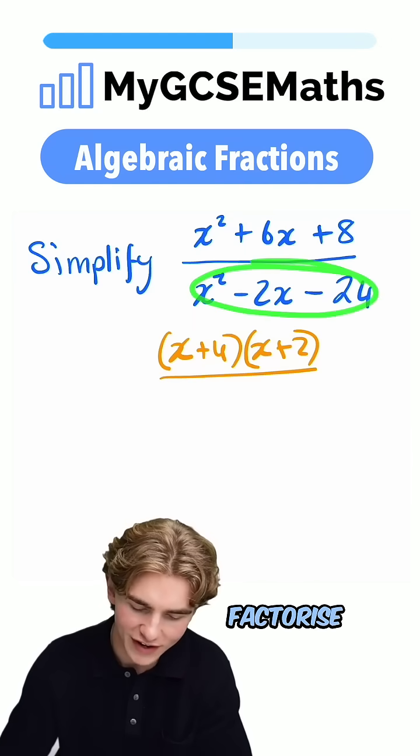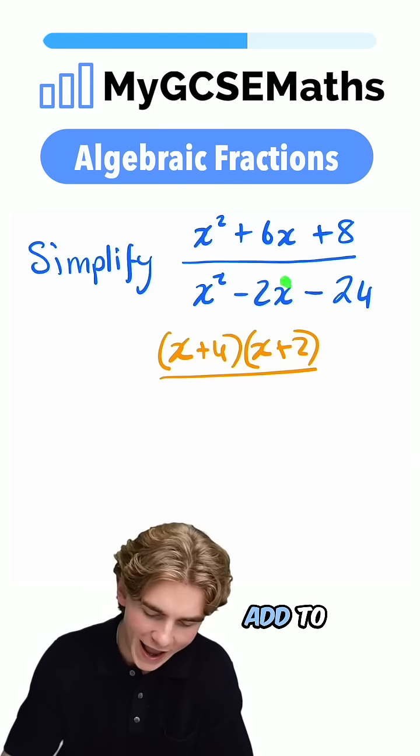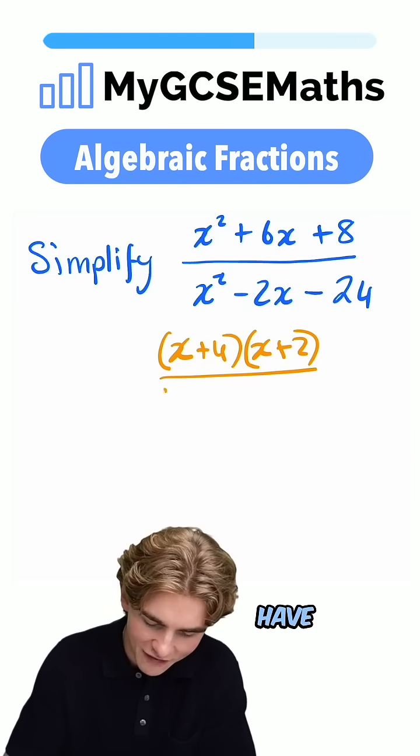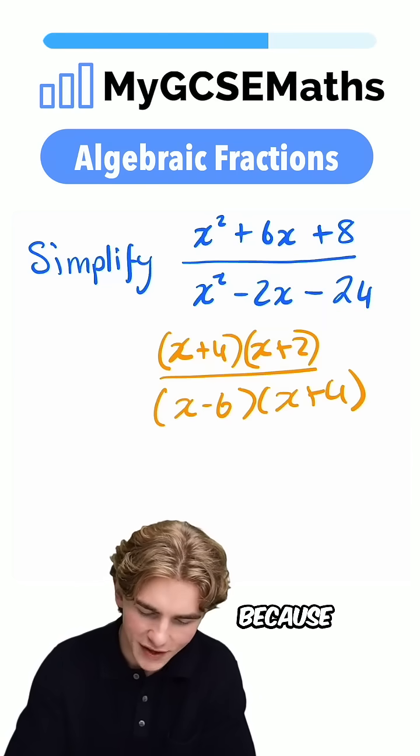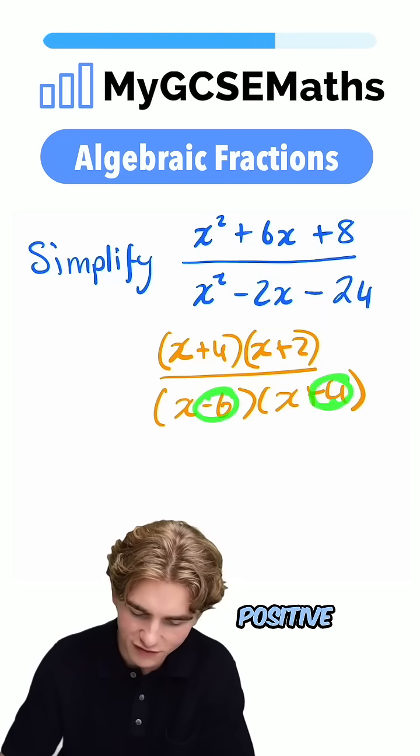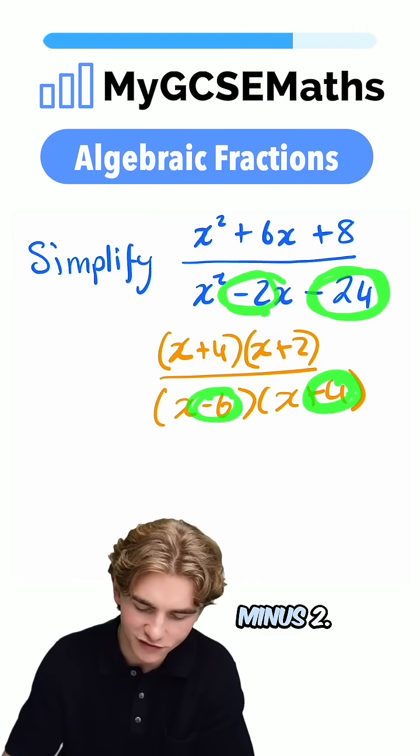Now, on the bottom, we're going to try and factorize this. Two numbers which multiply to give negative 24 and add to make minus 2. Here we're going to have x minus 6 and x plus 4, and that's because minus 6 times by positive 4 is negative 24, and minus 6 plus 4 is going to be minus 2.